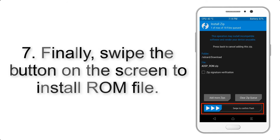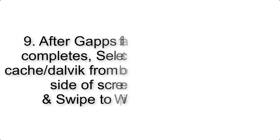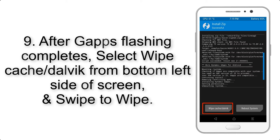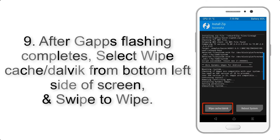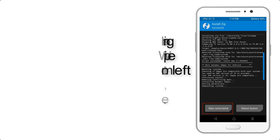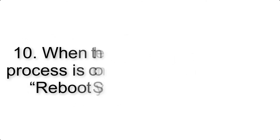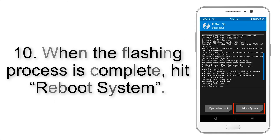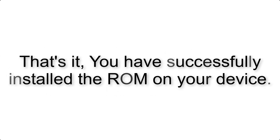Step 9: After GApps flashing completes, select Wipe Cache and Dalvik from the bottom left side of the screen and swipe to wipe. Step 10: When the flashing process is complete, hit Reboot System. That's it — you have successfully installed the ROM on your device.